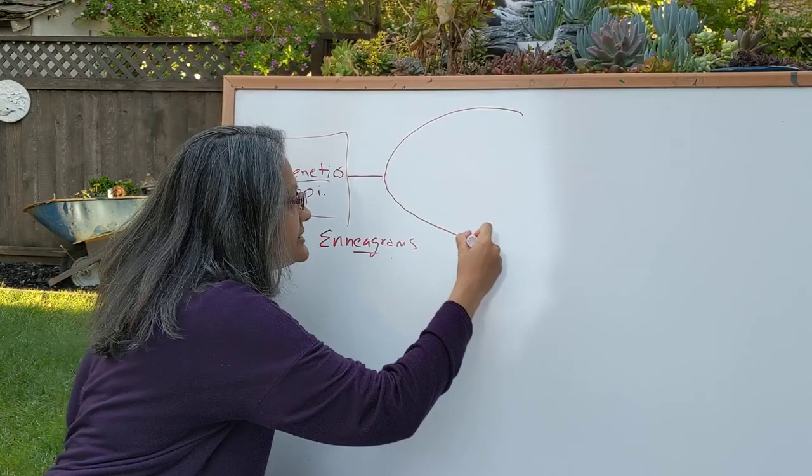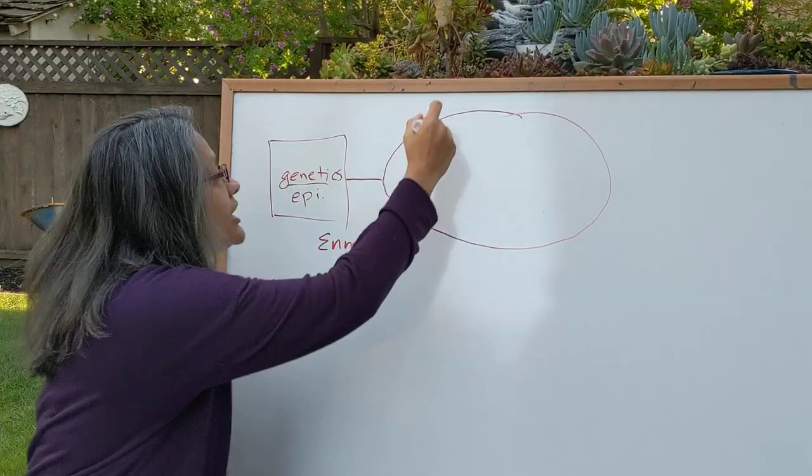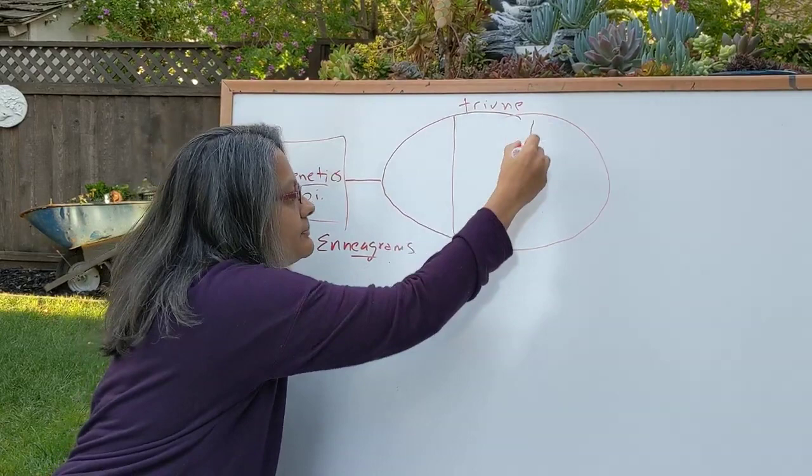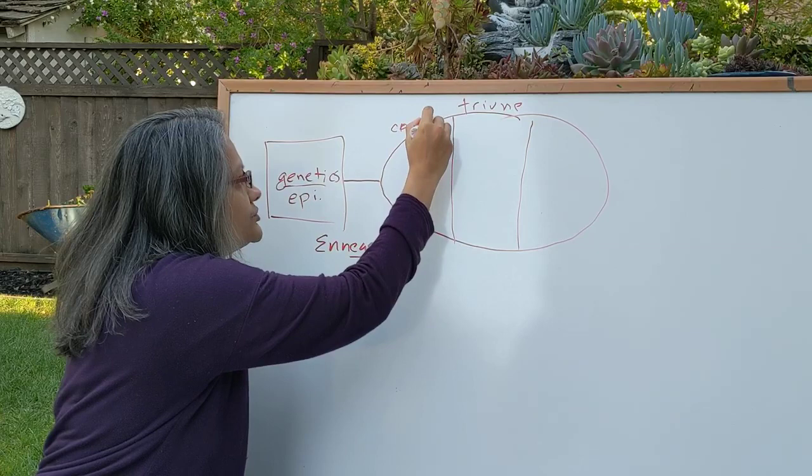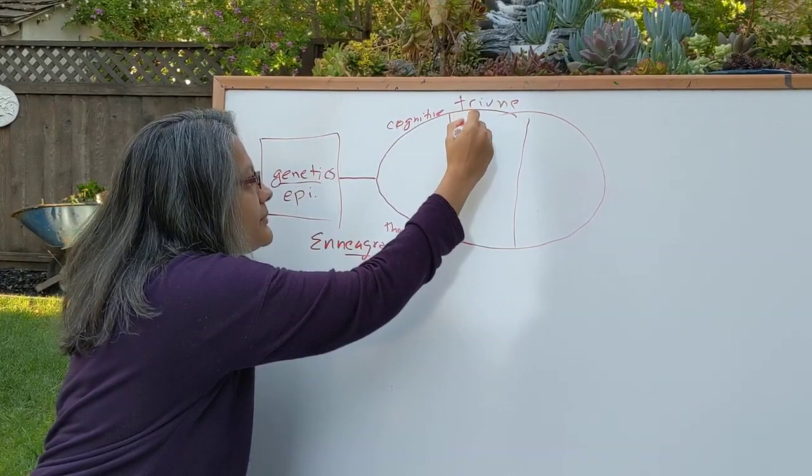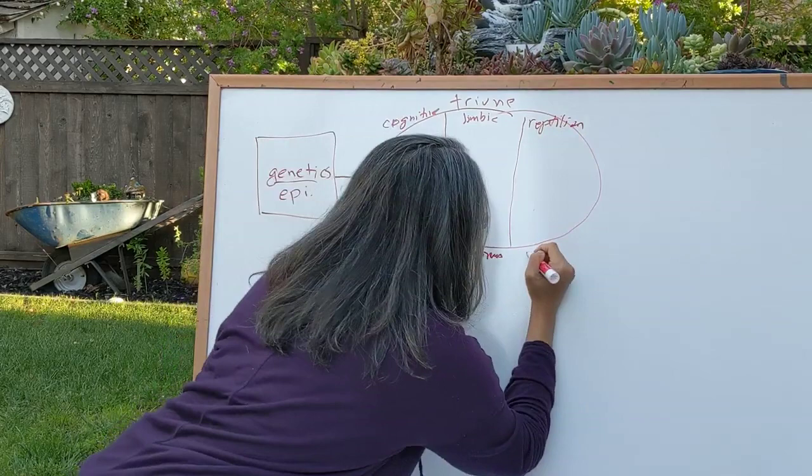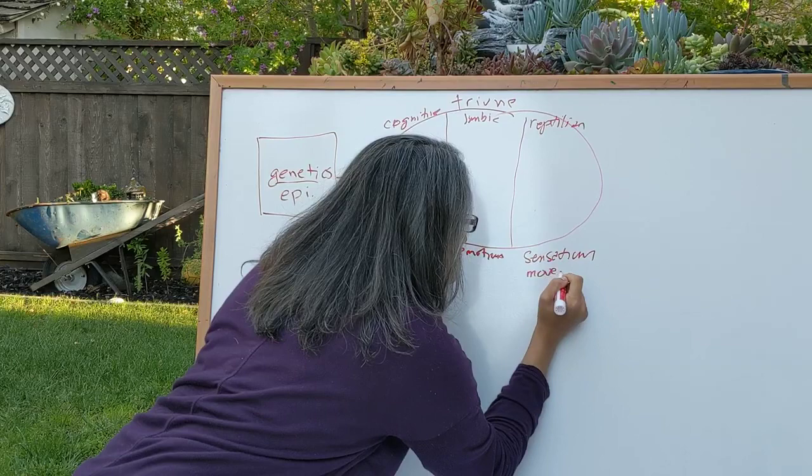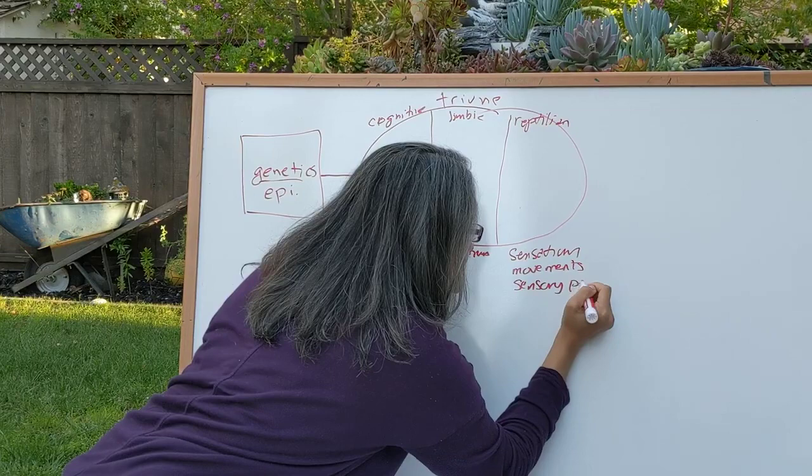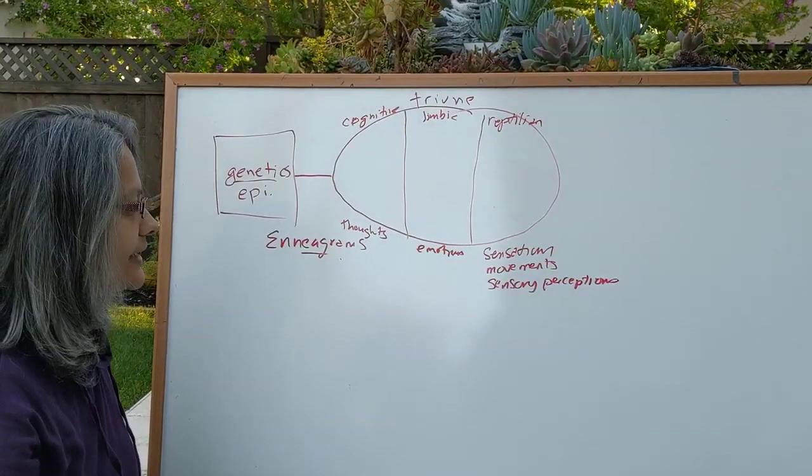And this is a model of the brain, it's from a book called Sensory Motor Therapy, amazing book by Pat Ogden. And it talks about a model of the brain known as the triune brain, which means three. Basically, it's three parts of the brain. There's the cognitive, which generates our thoughts. There's the limbic part of the brain, which generates our emotions. And there's a reptilian part of the brain, which generates our sensations, movements, and sensory perceptions. And by that, I mean the five senses: sight, sound, touch, smell, and taste.